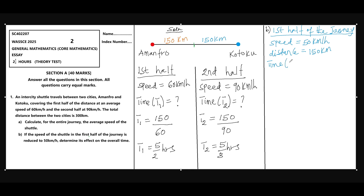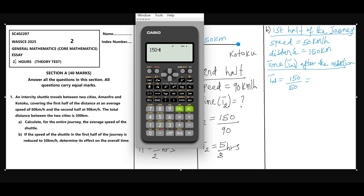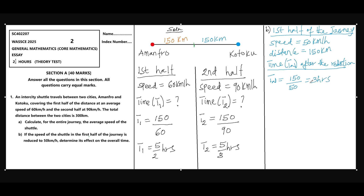The new time after the reduction in speed: using the formula time equals distance divided by speed, we have 150 kilometers divided by 50 kilometers per hour, which gives us 3 hours. So the new time is 3 hours. Previously, when the speed was 60 km/h, the time was 5/2 hours (2.5 hours), and now it has increased to 3 hours.